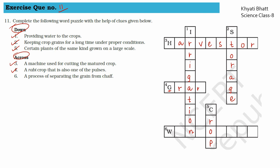Sixth one: a process of separating the grain from chaff. It starts with W, so it is winnowing.